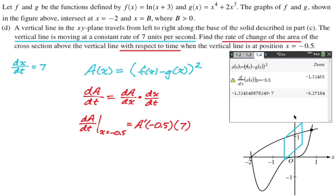And it's a calculator question, thankfully. So I had the calculator find the derivative of A(x) at x equals negative 0.5, negative 1.32455. Then I just took that and multiplied by 7 because I just have to get the numerical value. So dA/dt here is going to be approximately negative 9.272. And that's my answer.